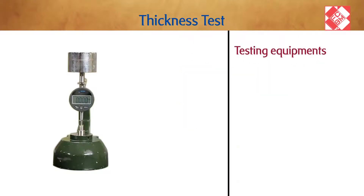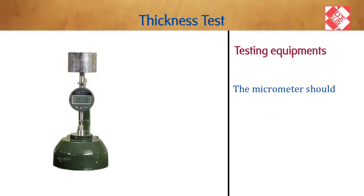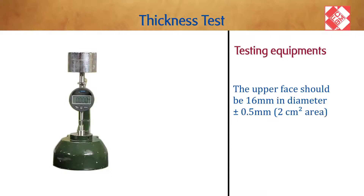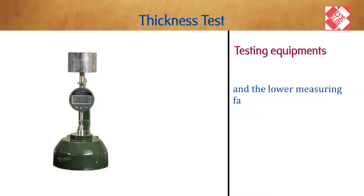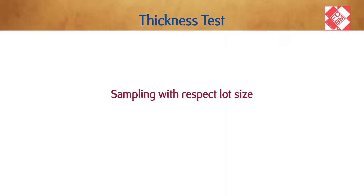Testing equipment: digital micrometer and sample cutter. The micrometer should have two circular measuring faces. The upper face should be 16 millimeters in diameter plus or minus 0.5 millimeters, providing a 2 square centimeter area. The lower measuring face must be larger so that the whole surface of the upper face comes into contact with it.